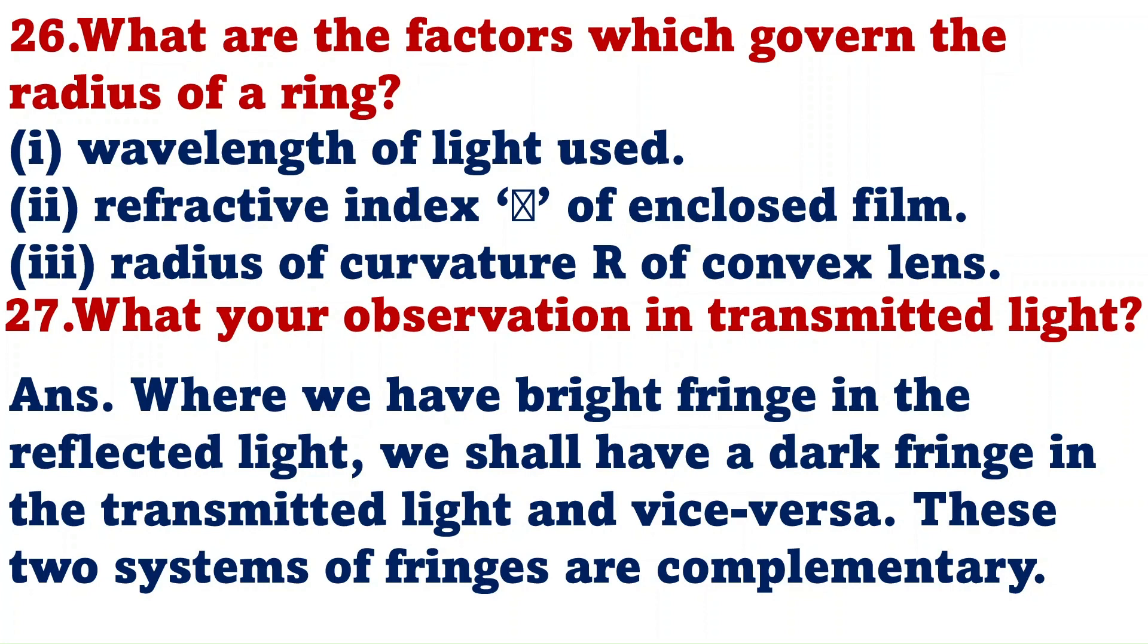What is your observation in transmitted light? Where we have bright fringe in the reflected light, we shall have a dark fringe in the transmitted light and vice versa. These two systems of fringes are complementary.